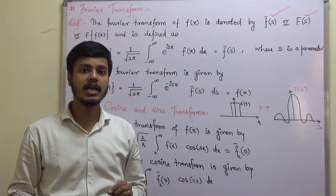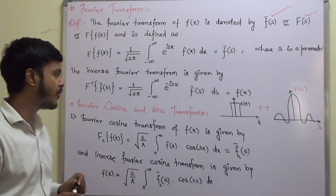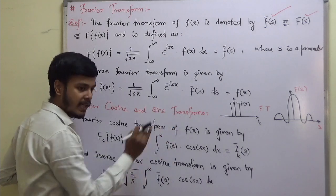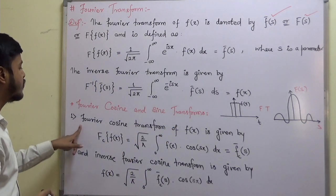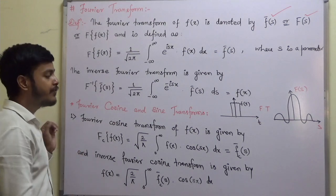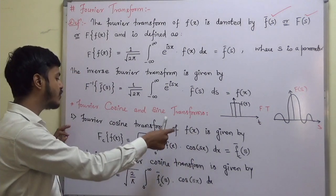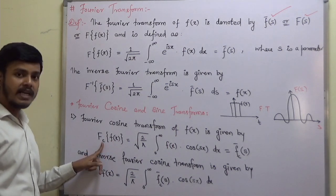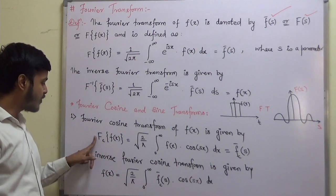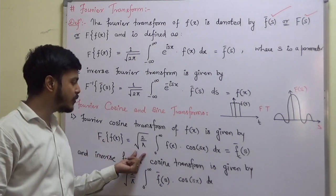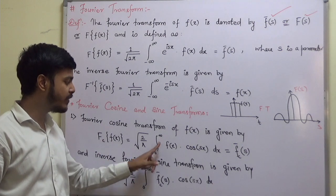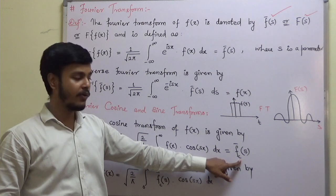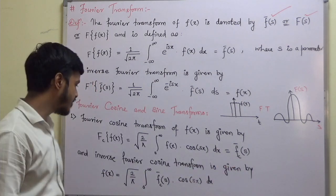After the definition of Fourier transform, we have the Fourier cosine and Fourier sine transforms. The Fourier cosine transform of f(x), denoted Fc[f(x)], is defined as: √(2/π) ∫ from 0 to ∞ f(x) cos(sx) dx, and this equals f̄c(s).